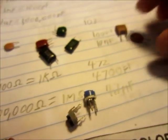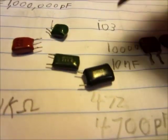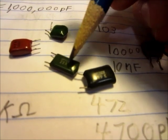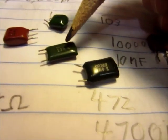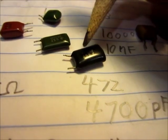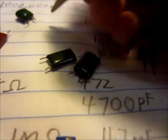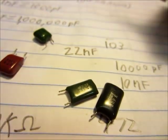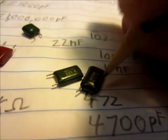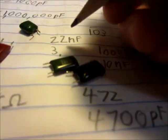Now there's another way that they often will mark capacitors. This capacitor has a 22 and then there's an N. The N is actually a decimal point, and the other two are just digits. This one is a 3N9. This one is 22 nanofarads.